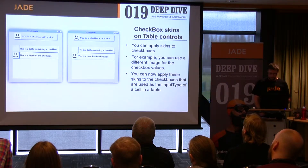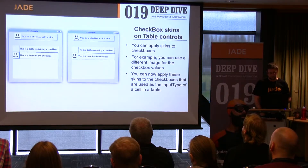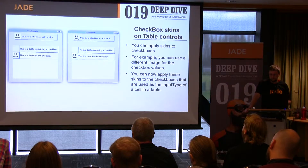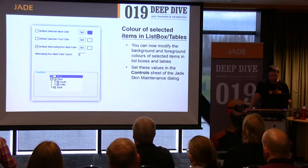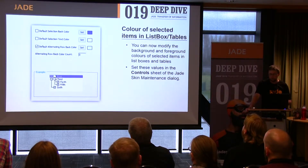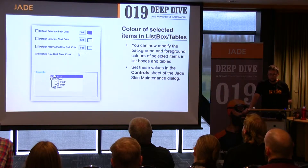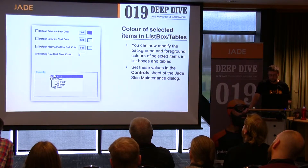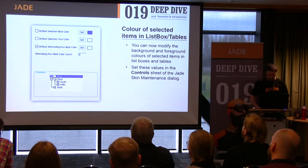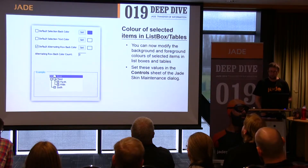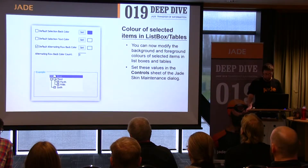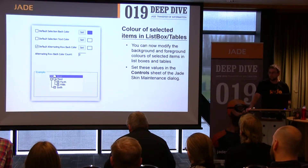The skin definition for a table now includes the ability to specify a jade skin checkbox. This enables you to define a skin for a table control and specify a checkbox skin that is used when either drawing a cell that has its input type property set to input type checkbox, or a cell control set to a checkbox control. You can now also modify the background and foreground of selected items in list boxes and tables. The jade skin list box and jade skin table classes have two new properties: selection color text, which controls the text color of the selected item, and the selection color property, which controls the background color of a selected item in a skin list box or table. These can be set in the skin maintenance dialog, and the default values of both properties are transparent, meaning the default selection colors defined by Windows are used as usual.